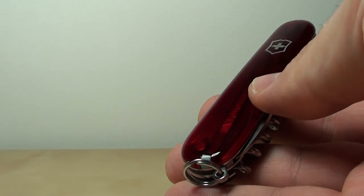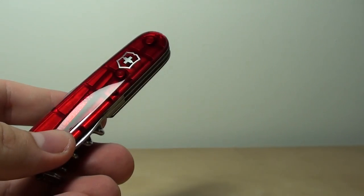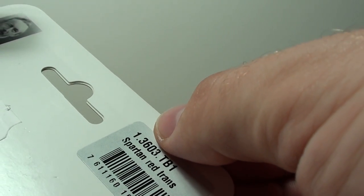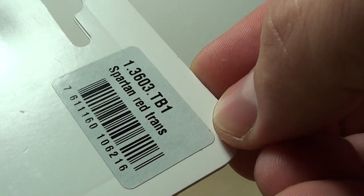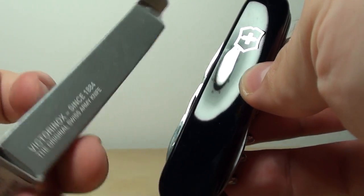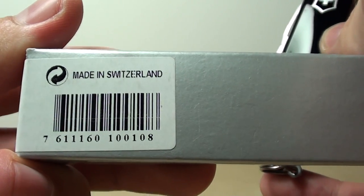I can really recommend this knife. Let me just show you the code, so you can order it. It's Spartan Red Transparent, 1.3603.TB1. And here you have the number, in case you need it. And for the ones who like the black one, you can check out my other review of it. This is the code for the black one, 1.3603.3 Spartan Black. And here is the barcode number.